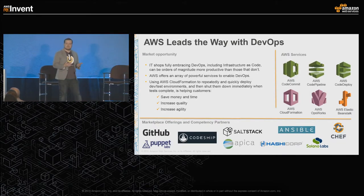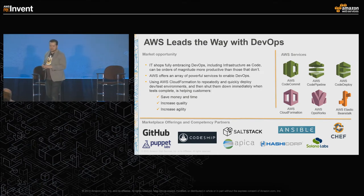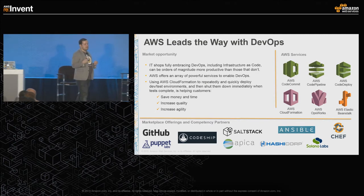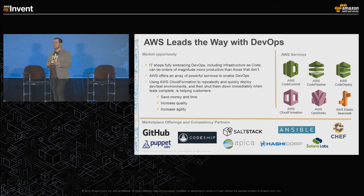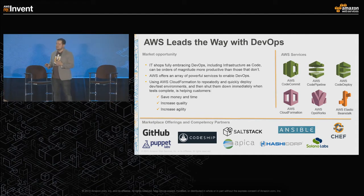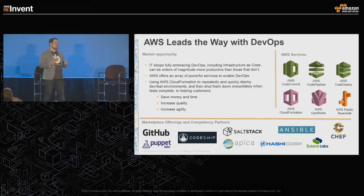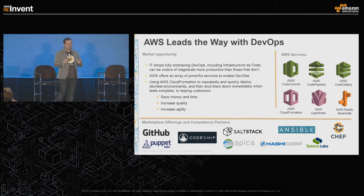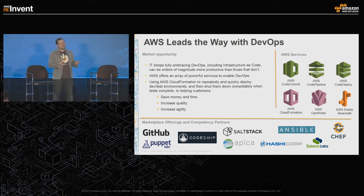AWS has a lot of offerings for DevOps. I'll briefly cover AWS CodeCommit, our Git hosting service, and demo AWS CodePipeline, our Continuous Delivery service, and AWS CodeDeploy, our deployment service. We also have AWS CloudFormation, which lets you spin up full environments including EC2, ELBs, and RDS. AWS OpsWorks is a managed Chef service that lets you break your application into layers — load balancer, web, app, database — and deploy using Chef recipes.